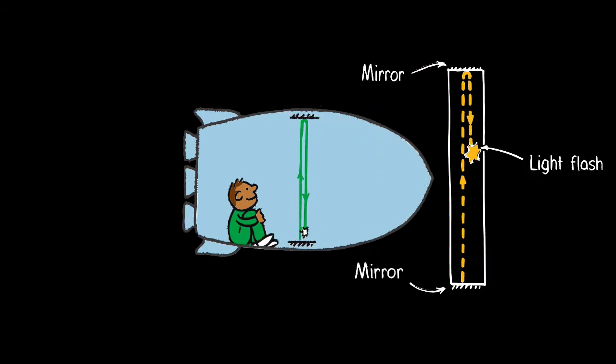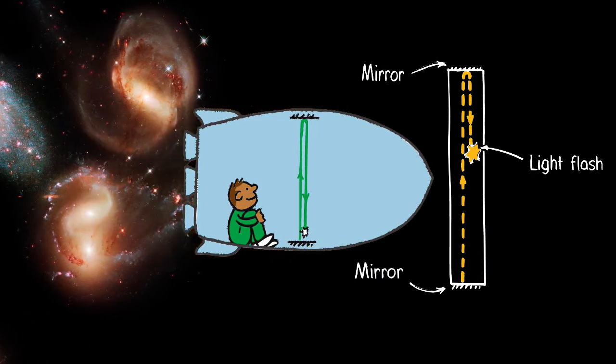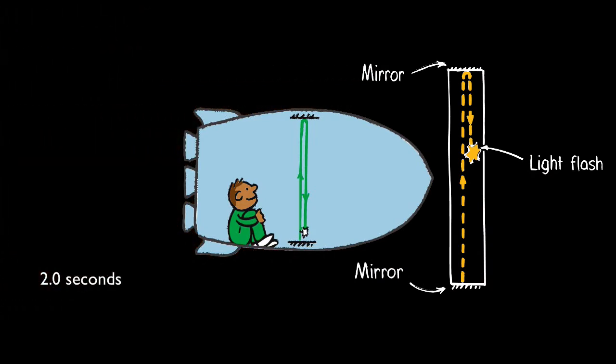To make things easy, let's say one tick of this clock equals one second. You watch the light go up and down, and there you have two seconds. That's from your point of view on the ship.